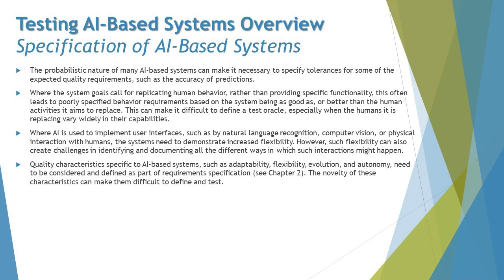Challenge number four: where the system goal calls for replicating human behaviors rather than providing specific functionality, this often leads to poorly specified behavior requirements — such as the system being 'as good as or better than' the human activity it aims to replace. This can make it difficult to define a test oracle, especially when the humans being replaced vary widely in their capabilities. Defining precisely how good an AI-based system needs to be at replacing a human activity is very difficult.